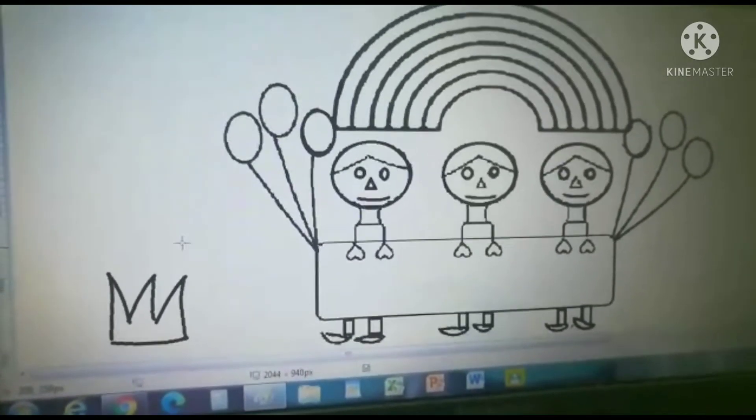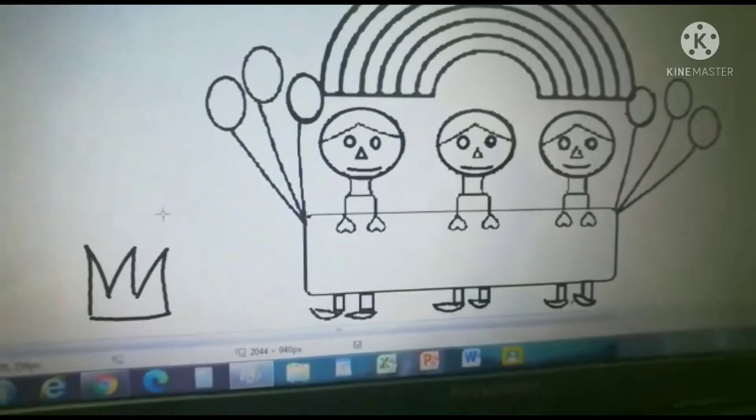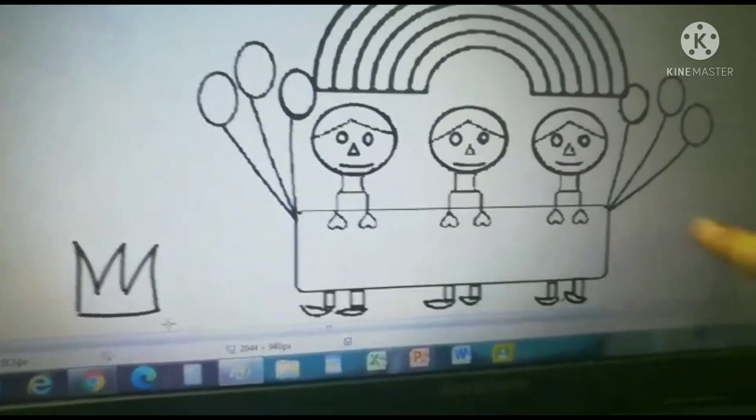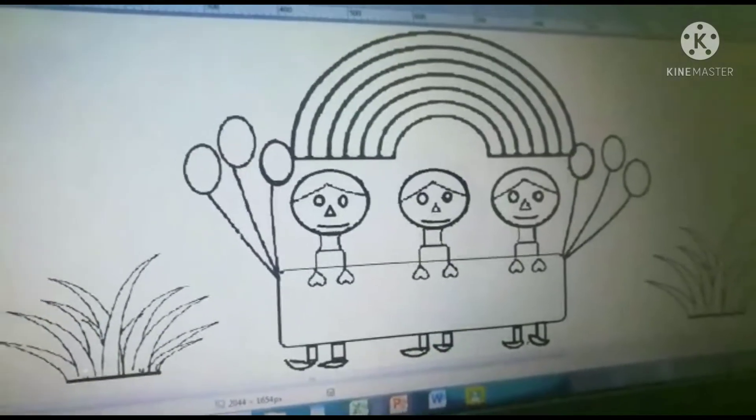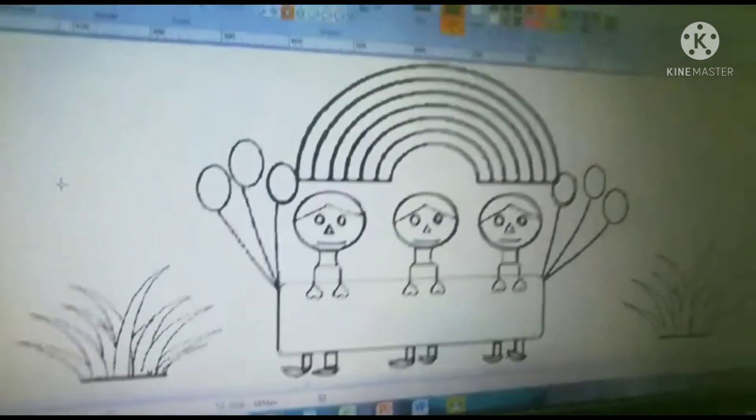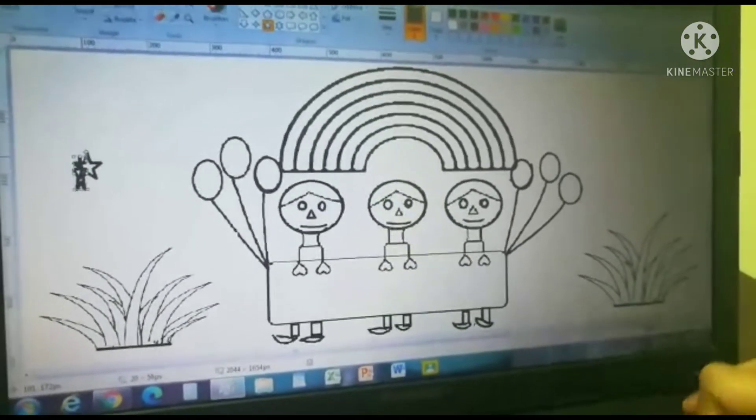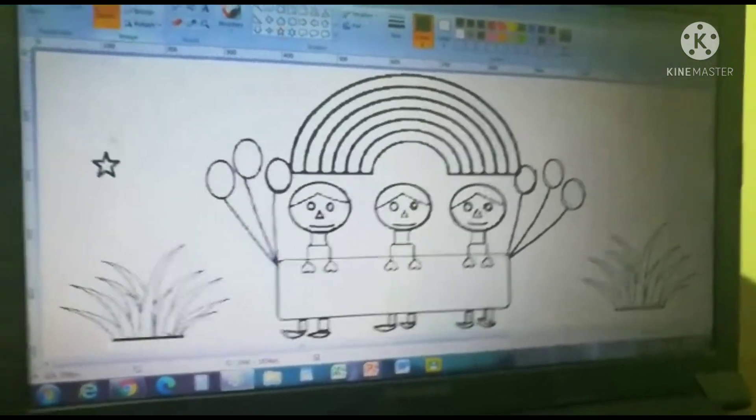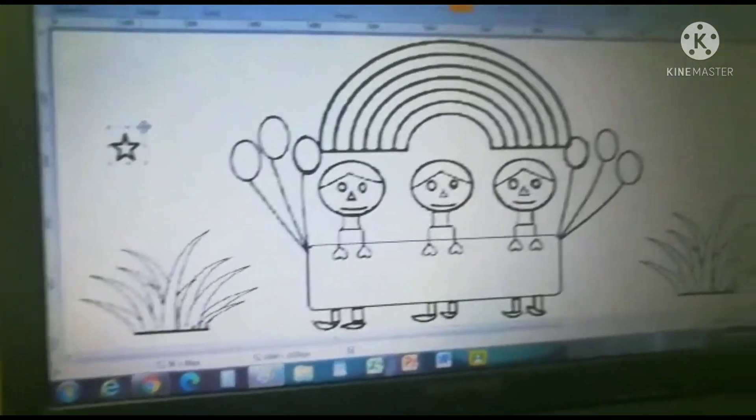Same we should draw in this side. Now I am going to decorate everything. Take star, take star. Now select it, go to select, select it, press control.